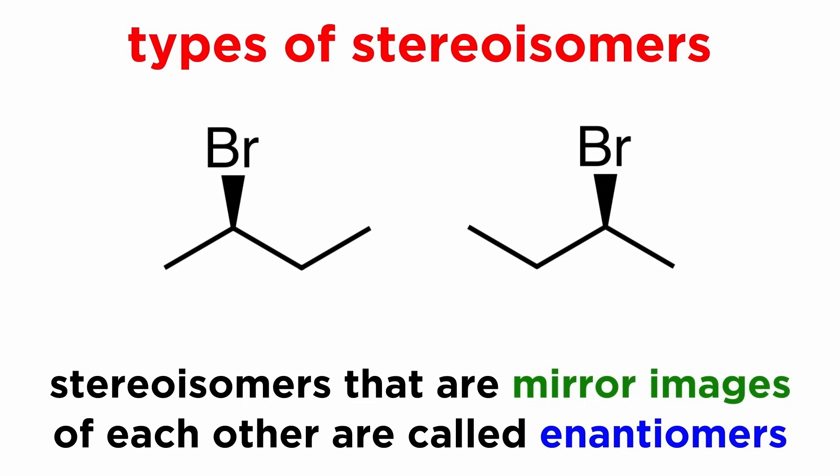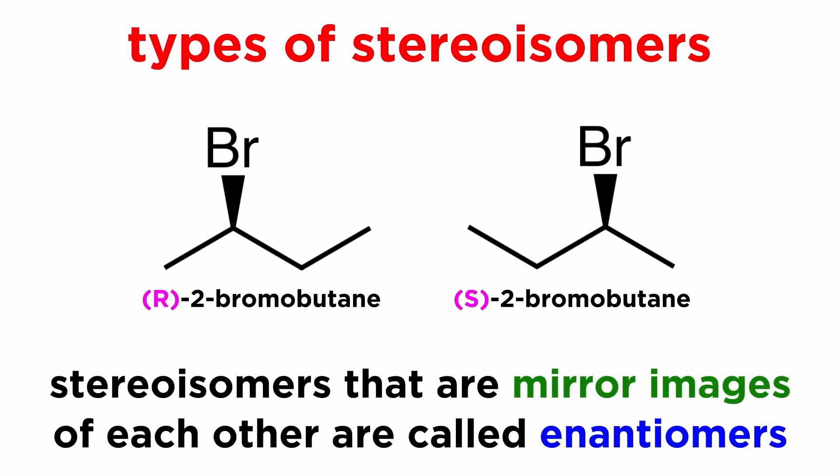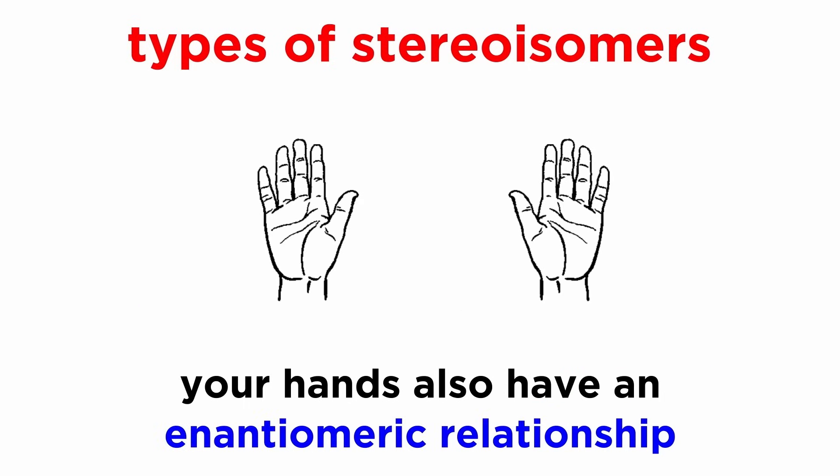Stereoisomers that are mirror images of one another are called enantiomers. Looking at 2-bromobutane, there is only one chiral center, so we have just these two possible stereoisomers, and these are enantiomers. Your hands can also be thought of as having an enantiomeric relationship.